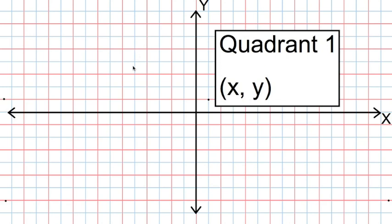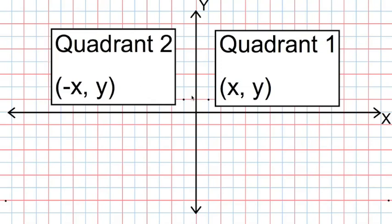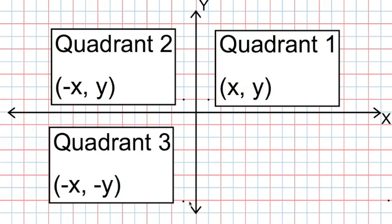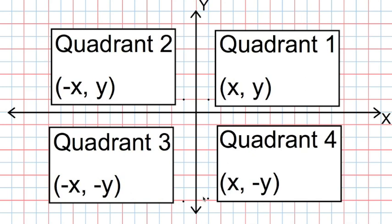Moving counterclockwise around the grid, we number the remaining quadrants. The upper left-hand quadrant is quadrant 2, which has negative x-coordinates and positive y-coordinates. The lower left quadrant is quadrant 3 — any point there will have negative x and negative y coordinates. Quadrant 4 is in the bottom right, with positive x-coordinates and negative y-coordinates.